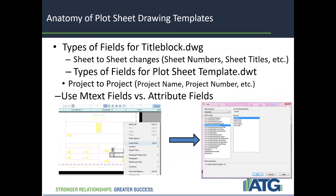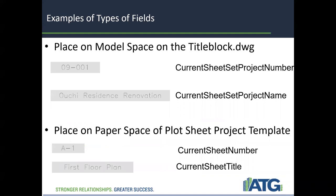We have plot sheet drawing templates. Types of fields for the title block drawing include sheet-to-sheet changes: sheet numbers, sheet titles, etc. Types of fields for the plot sheet template .DWT include project-to-project information: project name, project number, etc. Use mText fields versus attribute fields. Examples of types of fields you can place on model space on the title block drawing include the current sheet set project number and current sheet set project name.